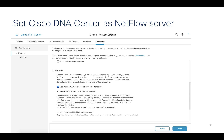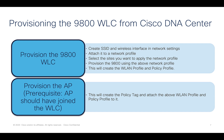First, make sure that the Cisco DNA Center is selected as the NetFlow collector in the telemetry settings in Cisco DNA Center — this is before you provision the 9800 wireless LAN controller and apply application telemetry. Then create the SSIDs and wireless interfaces in network settings in Cisco DNA Center, attach them to a network profile, select the sites you want to apply the network profile to, and then provision the 9800 controller using that network profile. This will create the wireless LAN profile and policy profile in the Cisco 9800 controller.